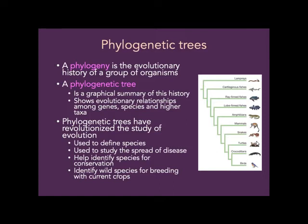We can also help identify species for conservation. Remember the dusky seaside sparrow — they bred the wrong strains together and it died. We can help decide which individuals of each species to preserve for conservation or breeding programs. And finally, to identify wild species for breeding with current crops — for example, if we want to add a particular gene to a crop, it's most efficient to find a wild species most closely related to the crop species to locate that gene.